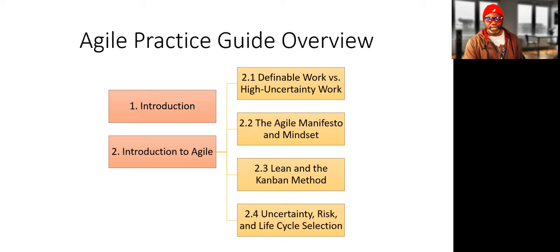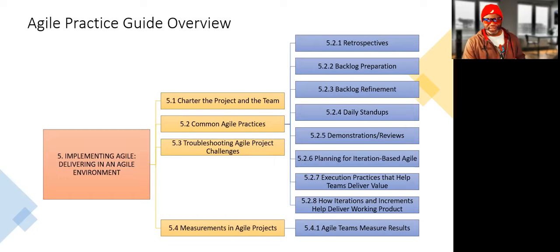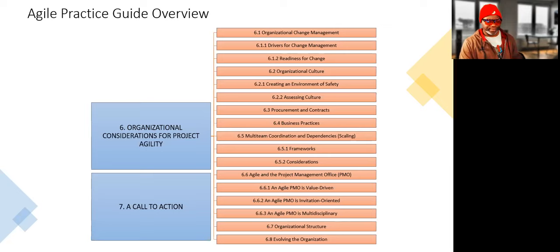This is the breakdown of the chapters. There's an introduction, an introduction to Agile, lifecycle selection which is pretty important, implementing Agile, delivering in an Agile environment. Chapter six is about organizational considerations for project agility, and chapter seven is a call to action.